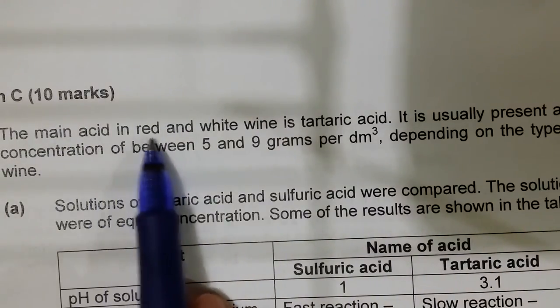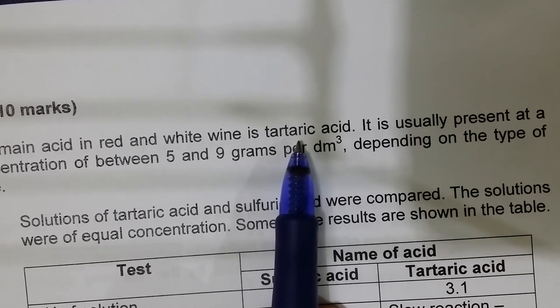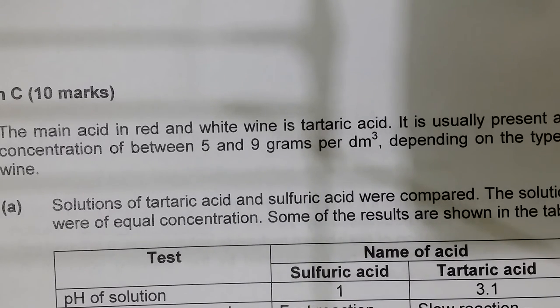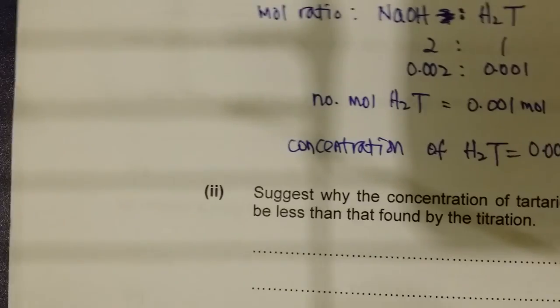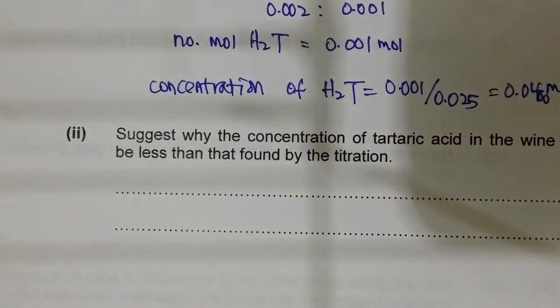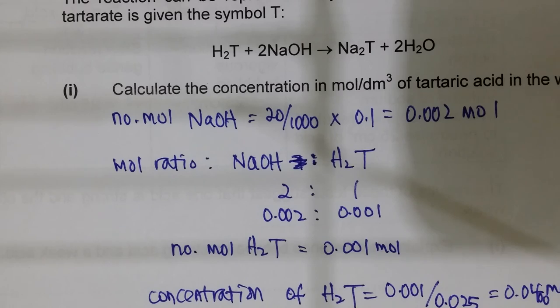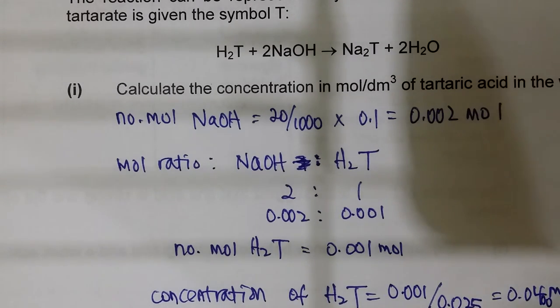Why might the actual concentration of tartaric acid in the wine be less than that found by titration? Because the question states that tartaric acid is the main acid in red and white wine — meaning other acids are also present. The titration measures total acid, so the wine may contain other acids, making the calculated tartaric acid concentration an overestimate. Please redo this test and come see me if you have questions.